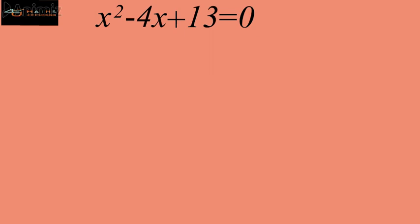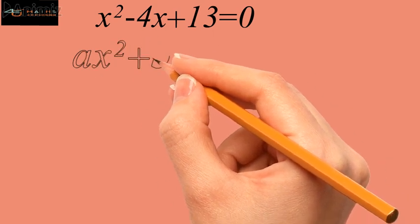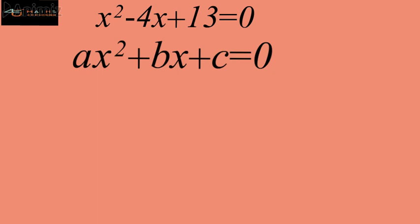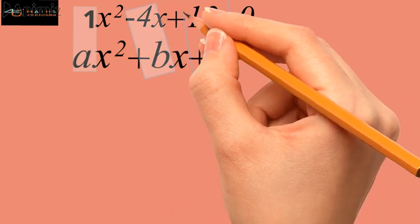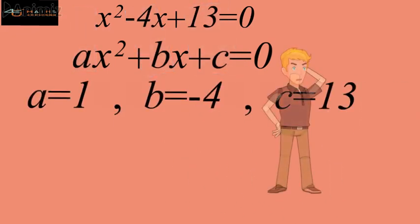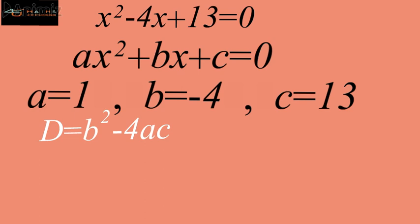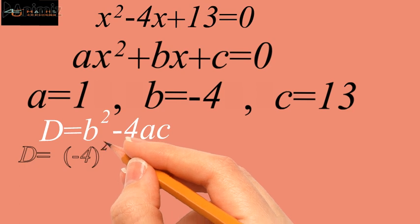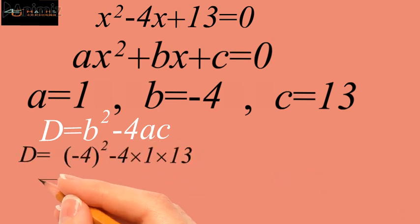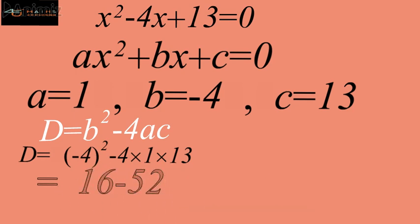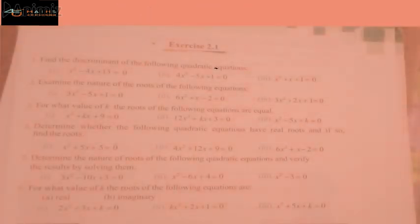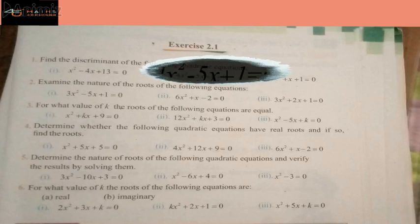First, we compare this equation with the standard form ax squared plus bx plus c equals 0. On comparing, we find that a equals 1, b equals minus 4, and c equals 13. Since the discriminant is d equals b squared minus 4ac, substituting the values gives d equals (−4)² minus 4 times 1 times 13, which simplifies to 16 minus 52, giving minus 36.